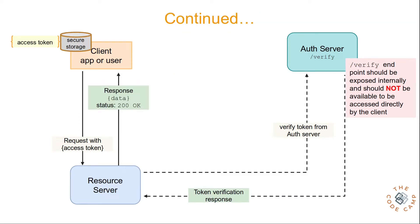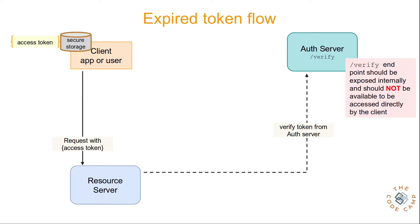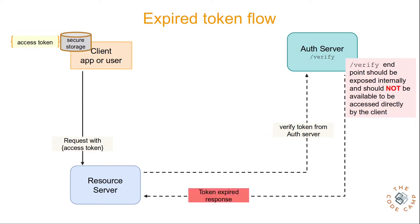So far so good. In subsequent calls to the resource server, the client picks the token from safe storage and attaches it in the request header. Since the access token is short-lived, it will expire soon. When a request is made with an expired token, the auth server invalidates it and a 401 Unauthorized response is sent back to the client.